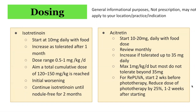For acitretin, start with a low dose of 10 to 20 milligrams daily with food, reviewed monthly, and can be increased as tolerated up to 35 milligrams per day. Some guidelines recommend a maximum of 1 milligram per kilogram per day, but many patients do not tolerate beyond 35 milligrams due to significant side effects. For retinoid PUVA or re-PUVA, retinoid can be started two weeks before phototherapy, and the dose of phototherapy can be reduced by 25% one to two weeks after starting.